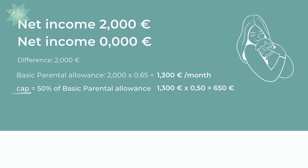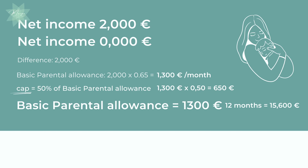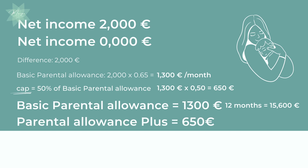The total parental allowance for 12 months, if she chooses basic parental allowance, will be 1,300 euros, so in the end 15,600 euros. The total Parental Allowance Plus, if she opts for 24 months, because here you can have double the time, will also be 15,600 euros.